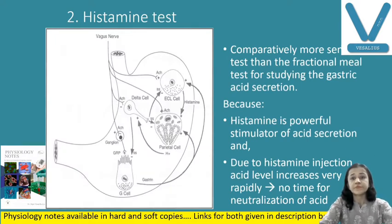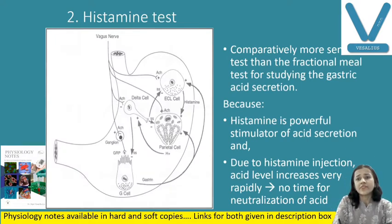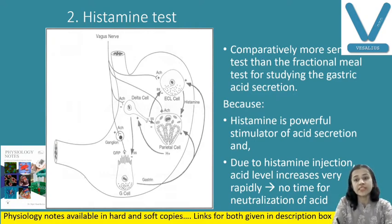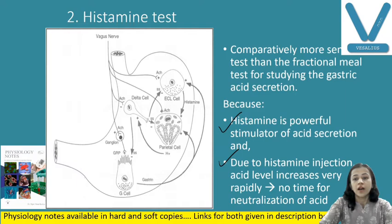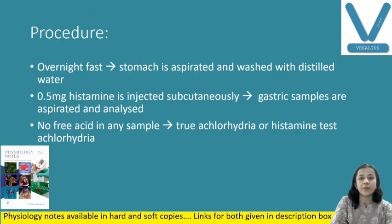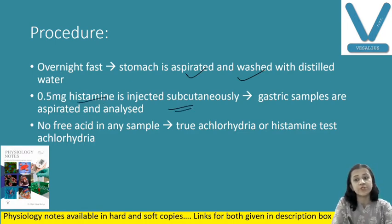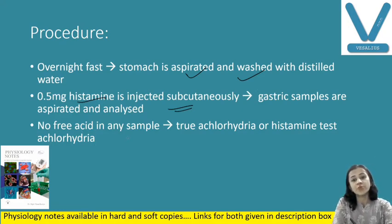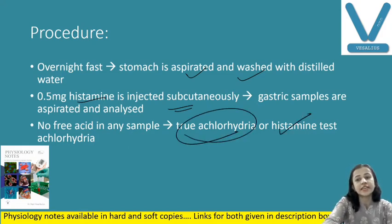Second is the histamine test. Comparatively this is more sensitive than the fractional meal test, because here we are giving histamine, which is a powerful stimulant of acid secretion. Due to histamine injection, acid level increases rapidly and there is no time for neutralization of acid. Procedure: after overnight fasting, stomach is aspirated and washed with distilled water. After that, 0.5 mg of histamine is injected subcutaneously, and then gastric samples are aspirated and analyzed. If no free acid is found in any sample, that shows true achlorhydria — or histamine test achlorhydria.